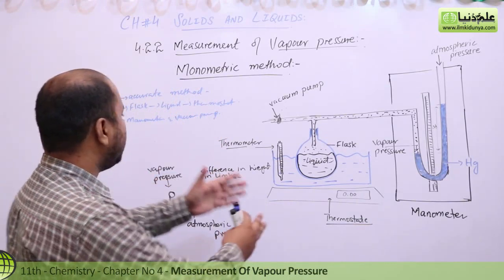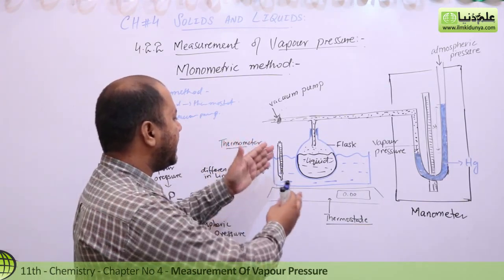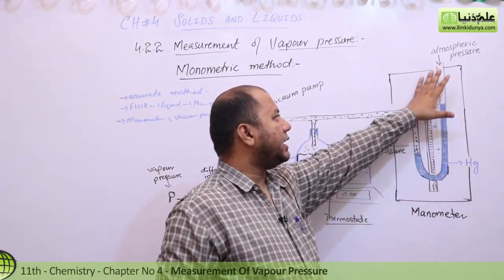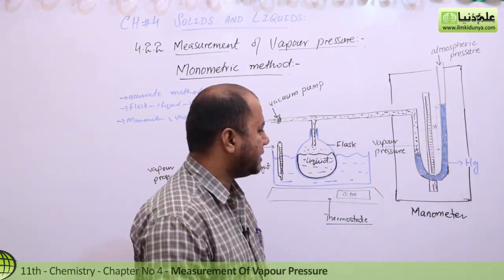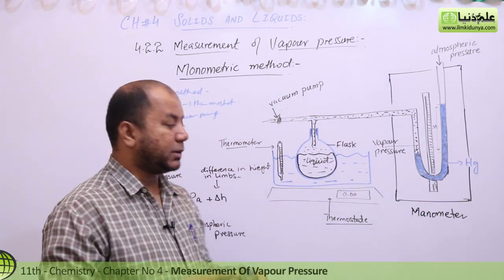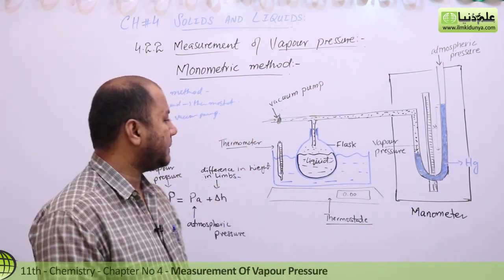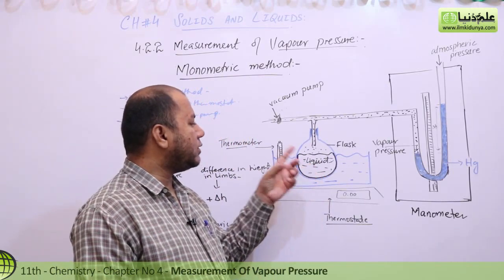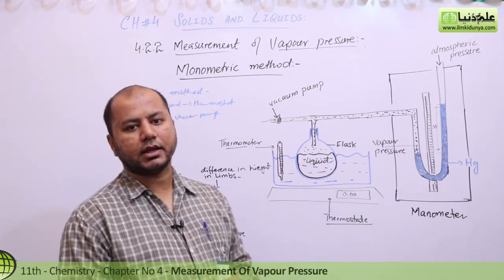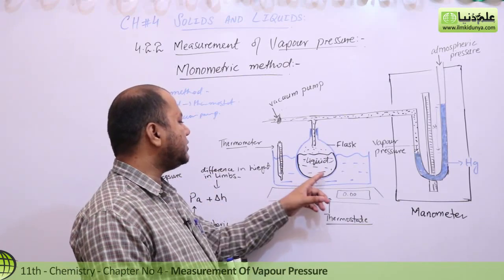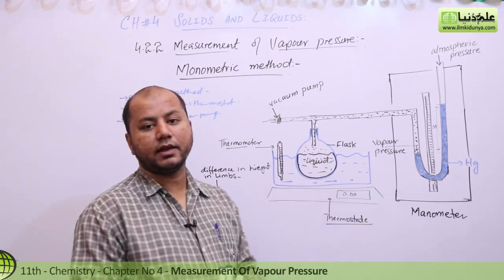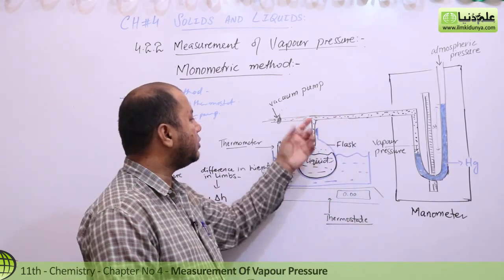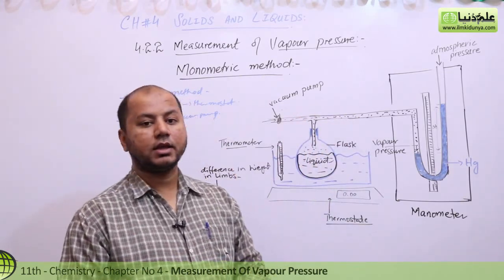In this setup you have a vacuum pump, flask, delivery tube, mercury inside, and atmospheric pressure being applied from the other side. But before doing this, students, first you have to freeze the liquid with a freezing agent. This is because the trapped air inside the liquid — when it freezes — will come out, and the vacuum pump will expel that air.